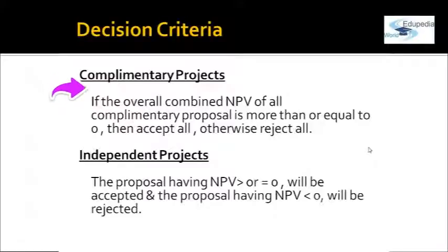For independent projects — where acceptance or rejection of one proposal does not affect another — using the NPV technique, accept all proposals with NPV greater than or equal to zero and reject all proposals with NPV less than zero, that is where the present value of cash outflow exceeds the present value of cash inflow. This is how the NPV technique, a DCF technique, is applied.